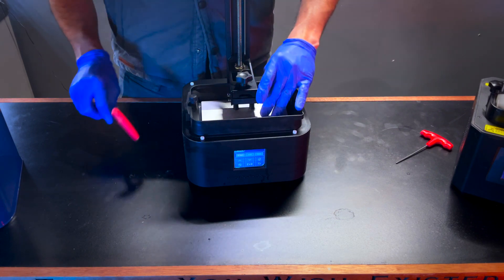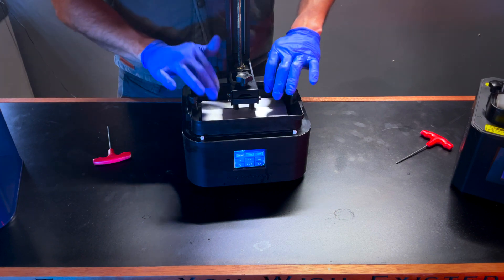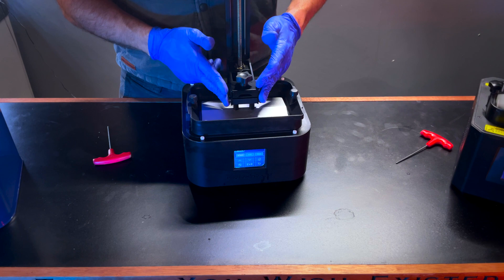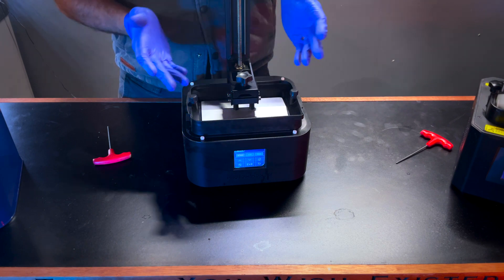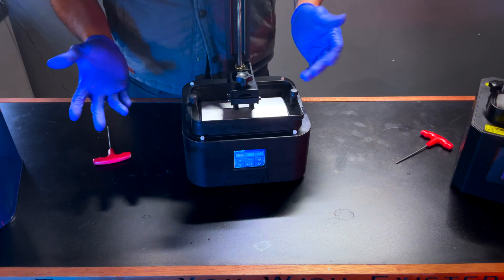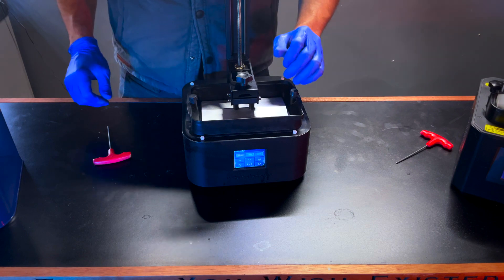However, when you first get a resin printer, you're going to want to go ahead and check these periodically. Because I found that they occasionally do come loose, but that's typically when the printer's new. As the printer ages and it's gotten more use and more grime gets in here, I don't find that these come loose as much.